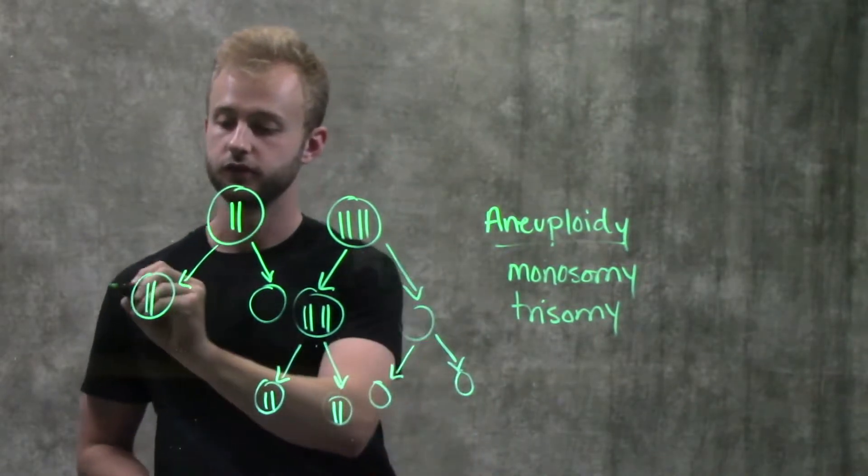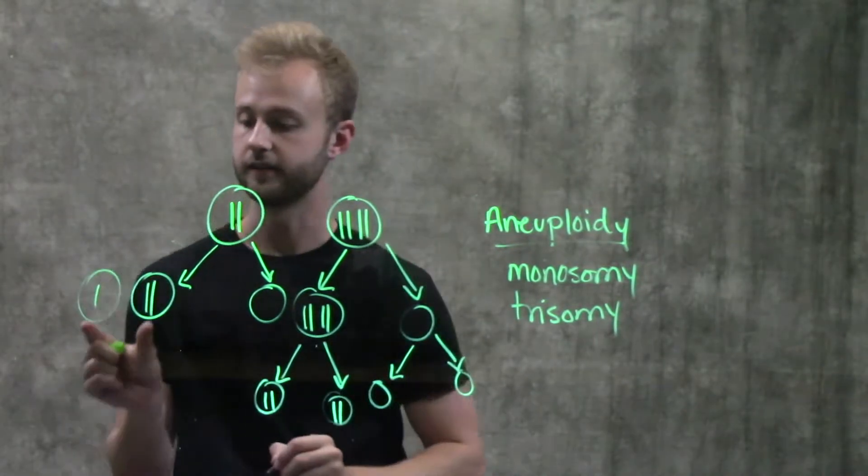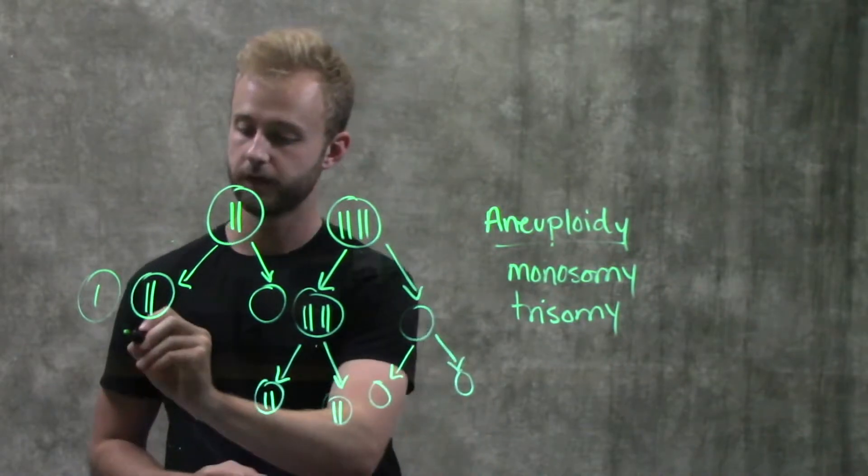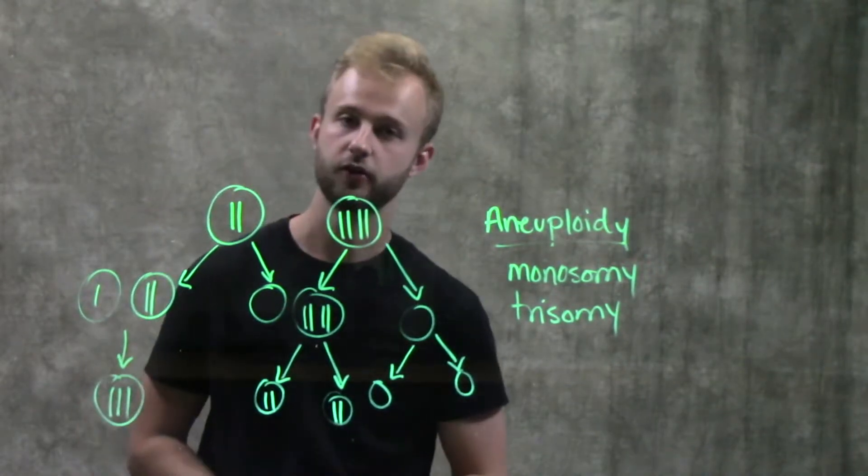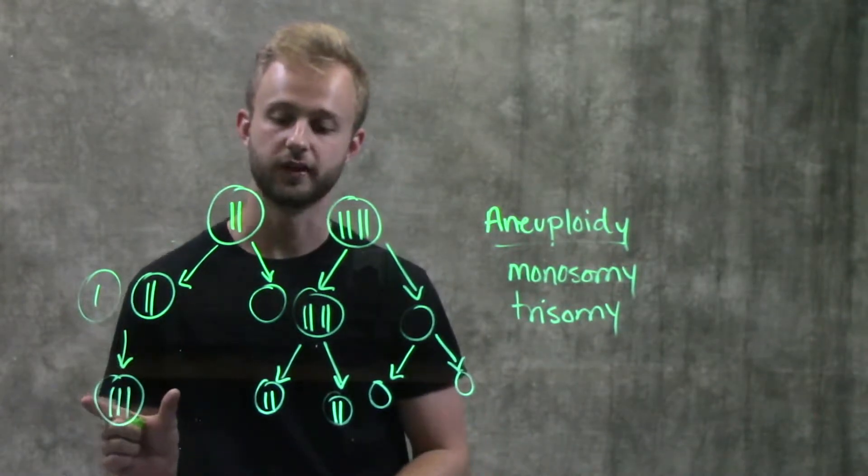So for example, when this gamete fuses with a normal gamete that has one copy of this chromosome, the resulting zygote will have three copies of that chromosome. So this zygote is a trisomic.